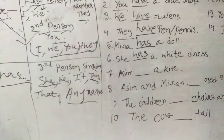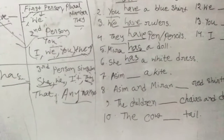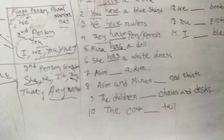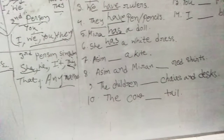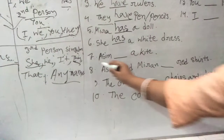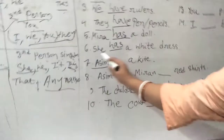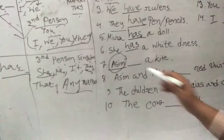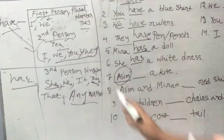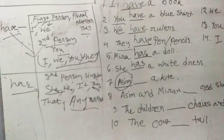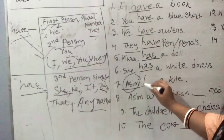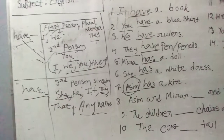I would like to ask you to have your Active English Workbook with you along with your pencils so that you can note it down, and your teacher will check it. Number seven: 'Asim ___ a kite.' Asim — is that a name? Of course, Asim is a boy's name and it is a singular number, meaning third person singular number. After third person singular number we put 'has': Asim has a kite.